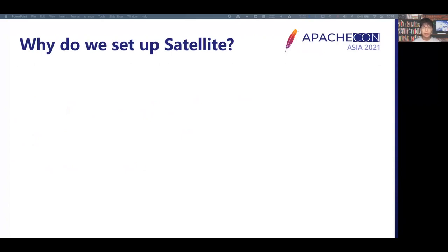The first reason is to protect the elementary data. As we know, SkyWalking provides many agents in different languages to collect the raw information, such as the spans in tracing, the raw logs, and the metrics. But when the OAP backend is not ready, some call information will be lost when using the gRPC transfer channel. So we want to set up a new project to decouple the agents and the backend rather than using the heavier MQ system.